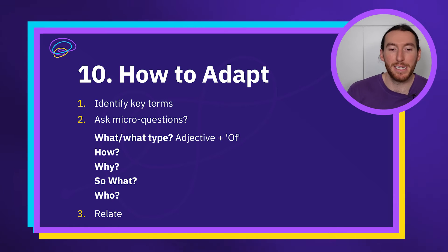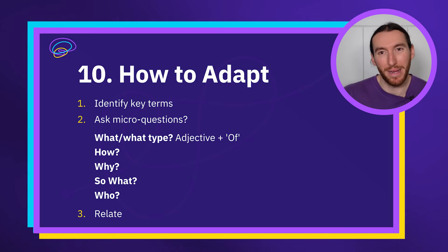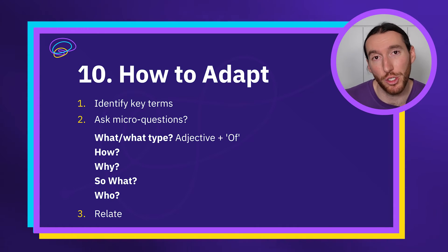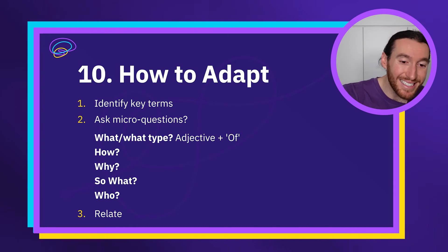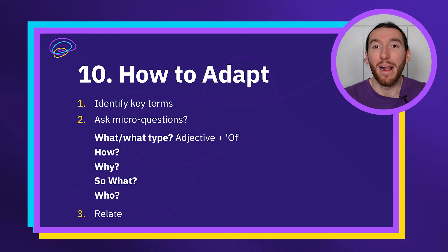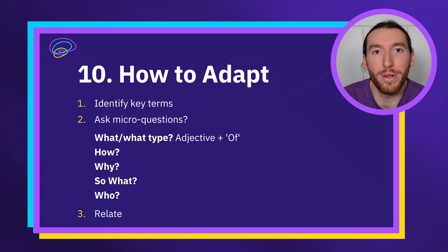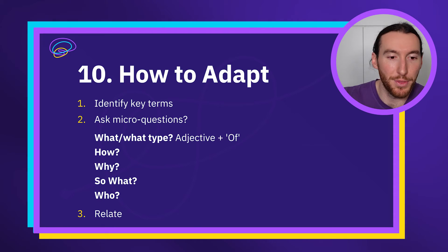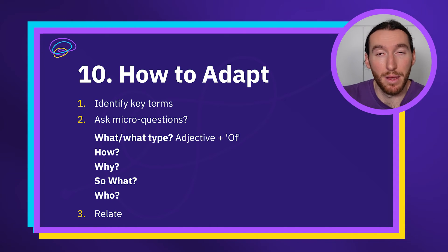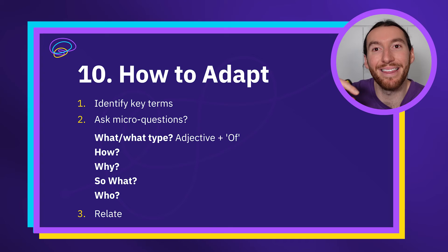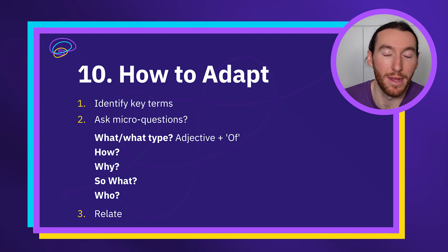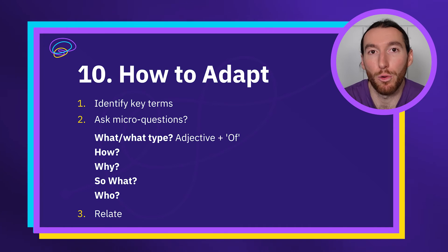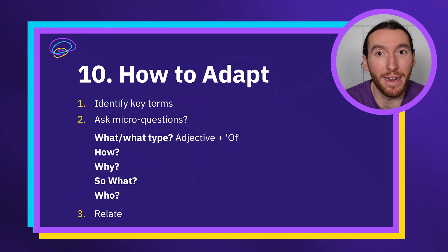Here's the basic process. On the day of the exam, don't start writing your first sentence straight away. First, identify the key terms — underline or mentally note them. For each term, ask: what type, how, who, what, so what. You don't have to answer all of them, but they're prompts to help you think about how to link what you already wanted to say. Then consider how to relate the different keywords together. You'll often find only two or three key terms in a question.